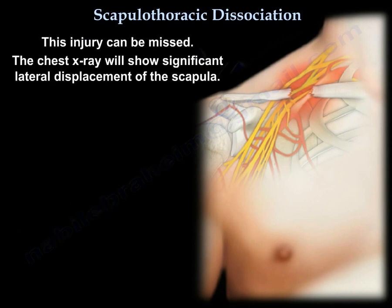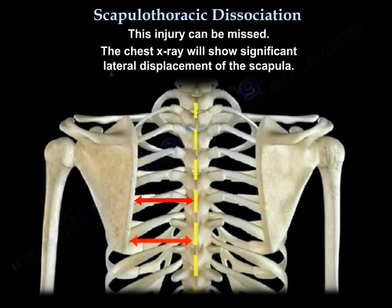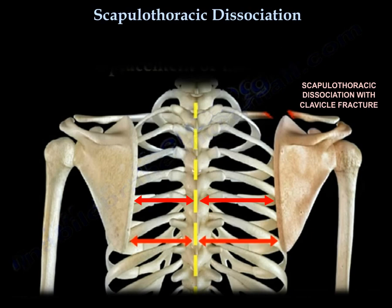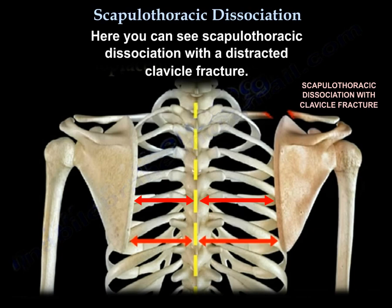This injury can be missed. The chest X-ray will show significant lateral displacement of the scapula. If you see a distracted clavicle on a chest X-ray, be concerned. And if you see more than 1 cm displacement of the medial edge of the scapula from the spinous process compared to the other side, be concerned. Here you can see a scapulothoracic dissociation with a distracted clavicle fracture.